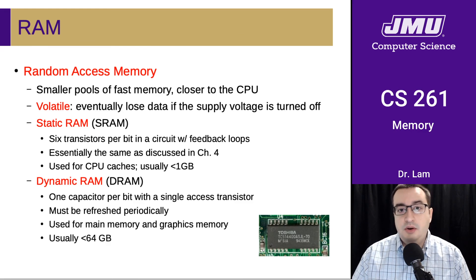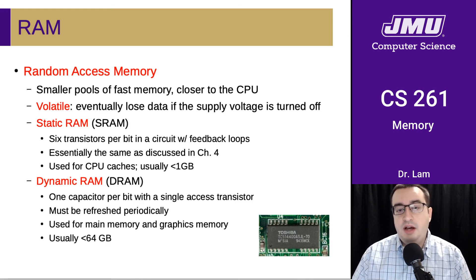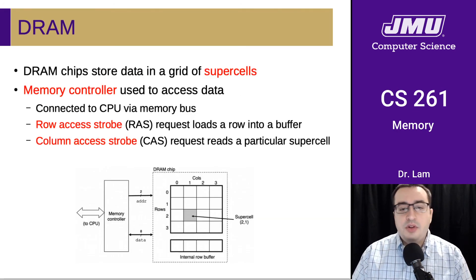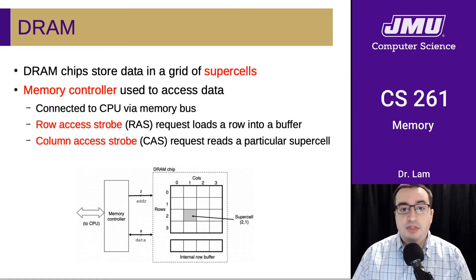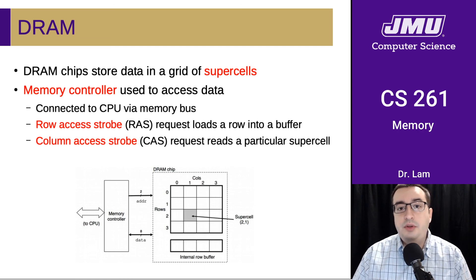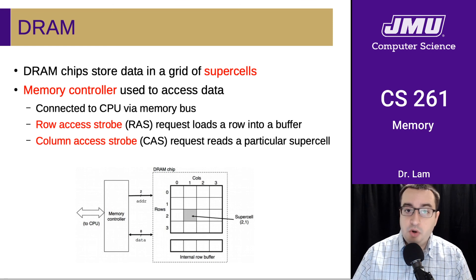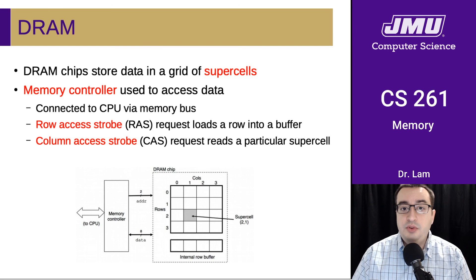DRAM can be much larger than SRAM — typically multiple gigabytes. Right now it's fairly common for laptops and desktops to have eight or 16 gigabytes, and high-performance computers could have even more than 64 gigabytes. DRAM chips store data in a two-dimensional grid of supercells, with a memory controller connected to the CPU via the memory bus. A row access strobe tells the memory controller which row the needed cell is in, loading that row into an internal buffer. Then a column access strobe is sent to read a particular cell inside that row.